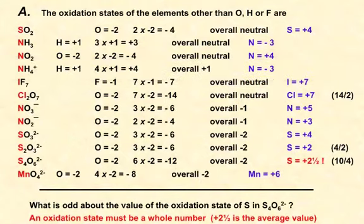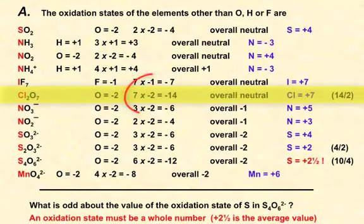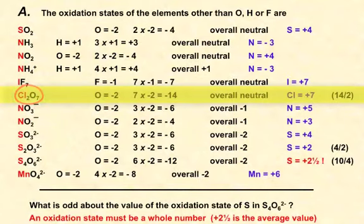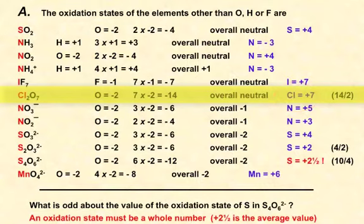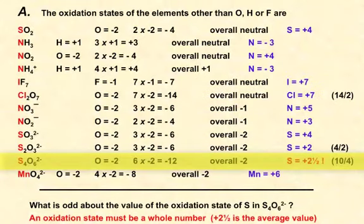Let's look at Cl2O7. Seven oxygens at minus two gives minus fourteen. The two chlorines must balance that out. If there were only one chlorine it would need to be plus fourteen, but with two chlorines, each must have an oxidation state of plus seven. Two plus sevens make plus fourteen, which balances the minus fourteen from the oxygens, giving an overall neutral molecule.